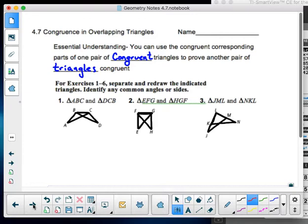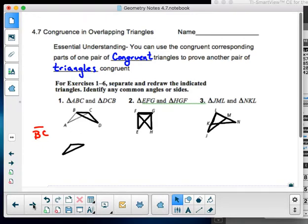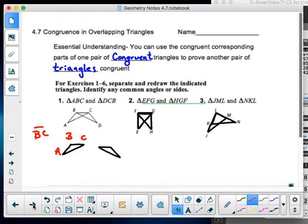In this first one, I have BC as my common side. And I can identify that by noticing that I've got BCA and I've got BCD.